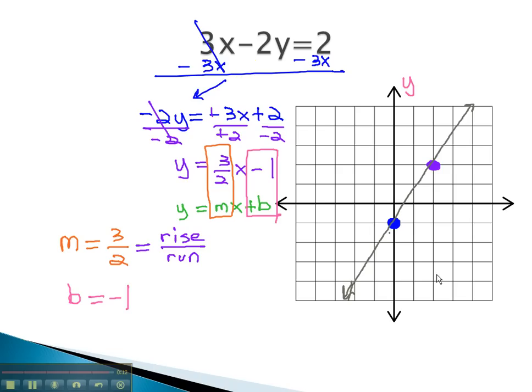To graph lines, we always start at the y-intercept and use the slope to get to the next point.